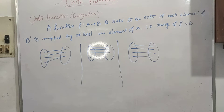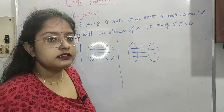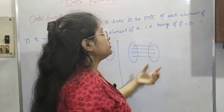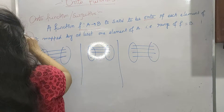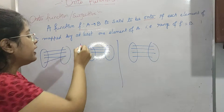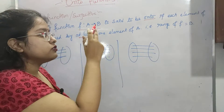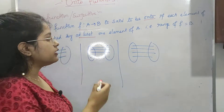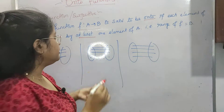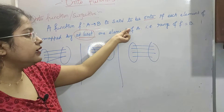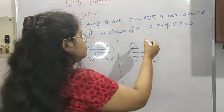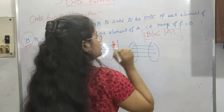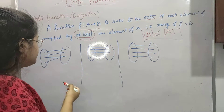Let's see onto functions. Onto functions are also called surjective. A function F defined from A to B is said to be an onto function if each element of B is mapped by at least one element of A. Up till now in one-to-one functions we had to see unique elements, but now we check that every element of B is covered. At least one — it can be more than one — element of A maps to it. That means the range of A equals B, and we can say B is less than or equal to A.